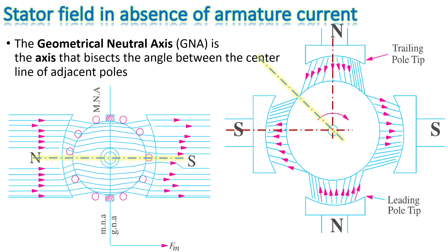The geometrical neutral axis is the axis that bisects the angle between the center line of adjacent poles. In a two-pole machine, the two poles have 180 degrees between them, so this angle is bisected by a vertical line — that is the geometrical neutral axis for this machine. In a four-pole machine, if we draw lines through the center of two adjacent poles, the angle between them is 90 degrees, so a line at 45 degrees bisects those center lines — that is the geometrical neutral axis for a four-pole machine.